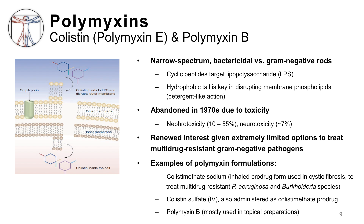However, there has been renewed interest in these agents given extremely limited treatment options for multidrug-resistant gram-negative pathogens. One example is carbapenem-resistant Enterobacteriaceae, or CRE, which was mentioned in the beta-lactam videos. CRE is often multidrug-resistant in addition to being carbapenem-resistant, and treatment options are extremely limited. Examples of polymyxin formulations include an inhaled formulation for use with cystic fibrosis-related pulmonary exacerbations due to Pseudomonas or Burkholderia species, an IV formulation, and a topical preparation with polymyxin B.